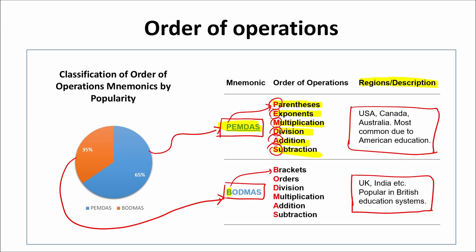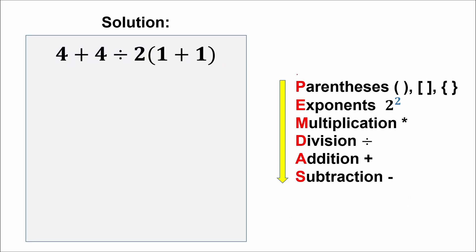Now that we know about order of operation, we can easily solve our question. Here's our question and here's our order of operation. We're talking about priorities: higher position means higher priority, lower position means lower priority. We need to go from the top to the bottom. Every time you have a numerical expression — for example in an exam — just write this quick checklist on the right side and work through it step by step.